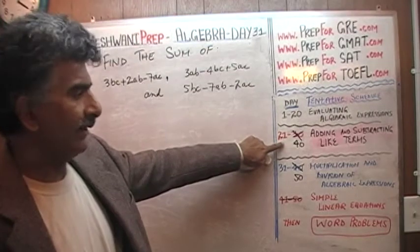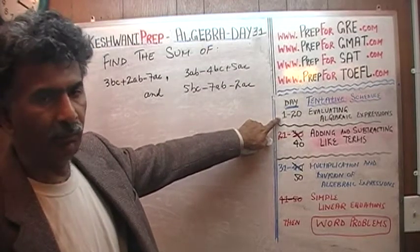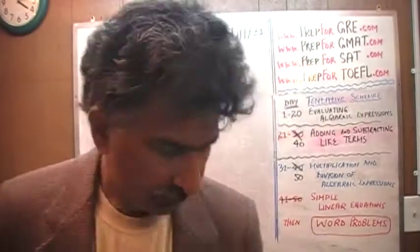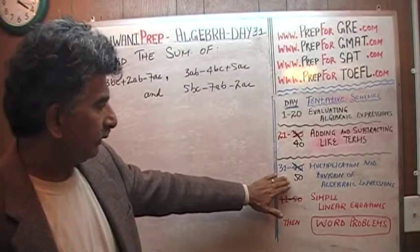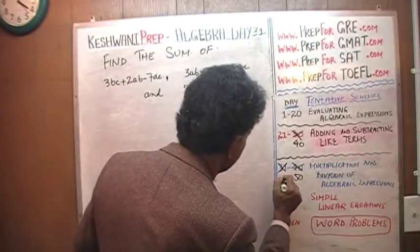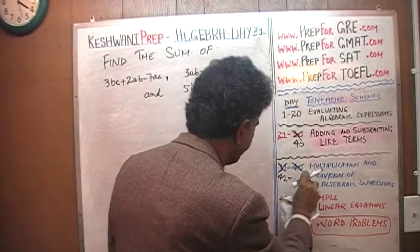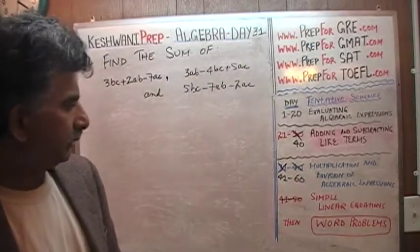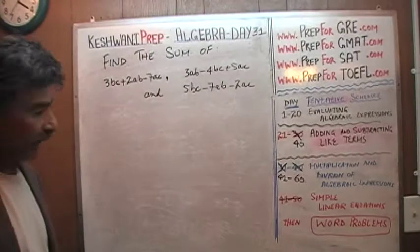We are in the process of learning how to add and subtract like terms. On the first 20 days we learned how to evaluate algebraic expressions. Now we are learning how to add and subtract like terms, and that's what we're going to do for the next 20 days. Then days 41 through 60 we'll learn how to multiply algebraic expressions.